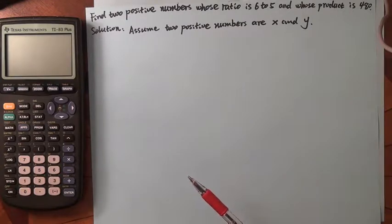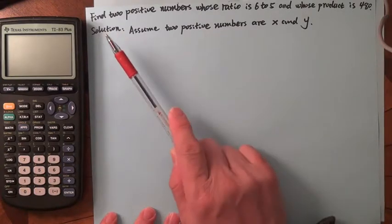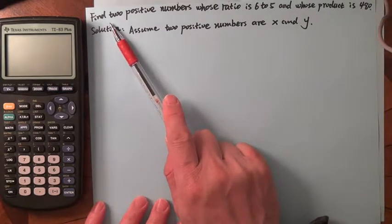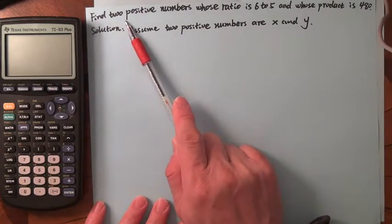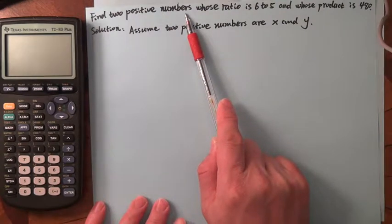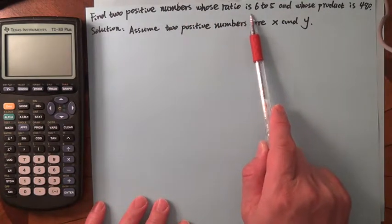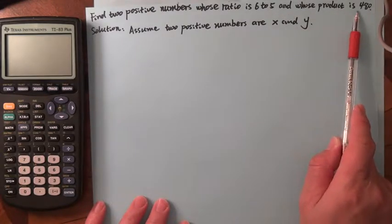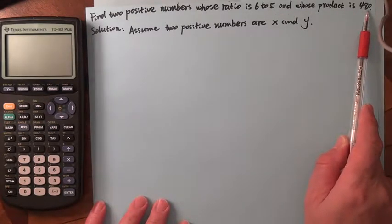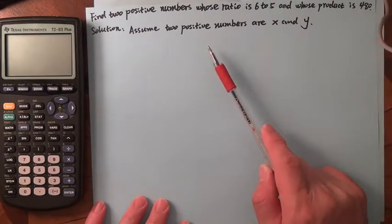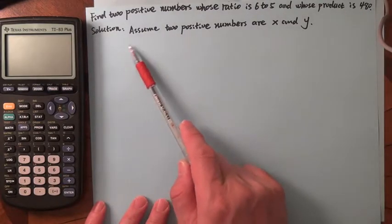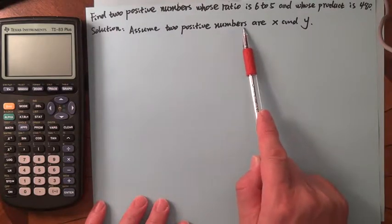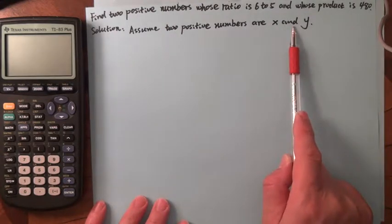In this lecture we will look at this example: find two positive numbers whose ratio is 6 to 5 and whose product is 480. We need to assume these two positive numbers are X and Y.